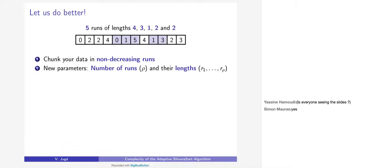Now we have more parameters than before. Previously the only parameter was n, the length of the array, so we could only find a uniform bound over all arrays of length n. But now we have five runs whose lengths are 4, 3, 1, 2, and 2, and these are additional parameters we might take into account when counting how many comparisons we need.